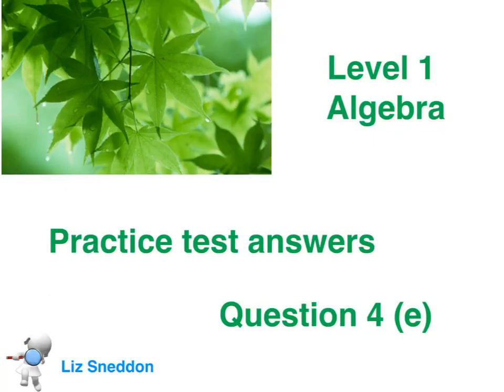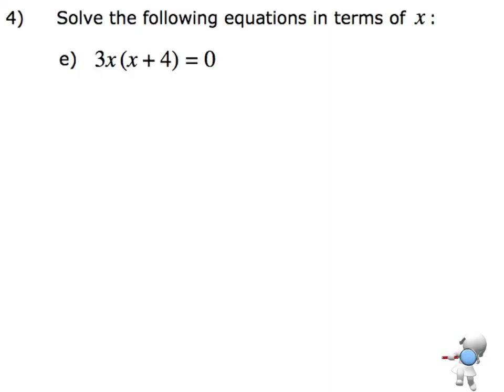Here's the answer for question 4e. So we want to solve this equation here. Now I'm just going to take a little bit of a sidestep for a moment and just remind you that if I did, say, 0 times 5, that's going to give me an answer of 0.